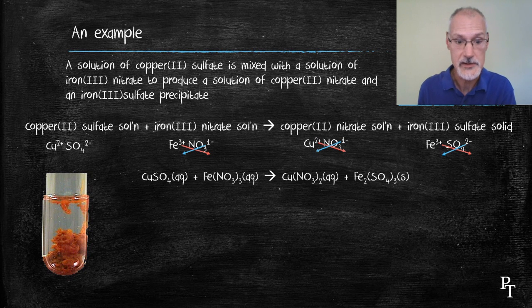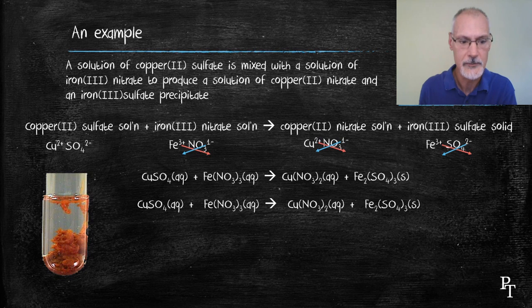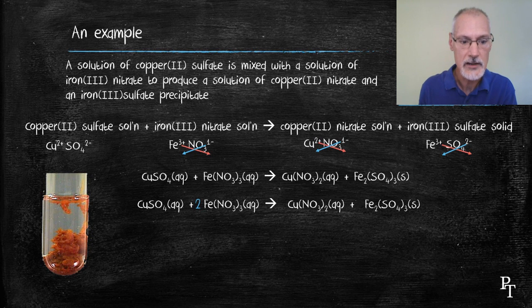I am now going to try to balance the equation and begin by inspection here. I notice there are 2 irons on the product side, so I am going to bring the coefficient 2 into play here. So that doubles the number of iron, but it also doubles my number of nitrates, up to 6.